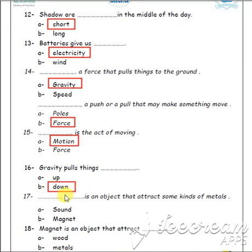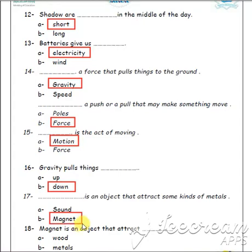Good job! Number 16: gravity pulls things up or down? Down — for sure! Number 17: what is an object that attracts some kinds of metals — sound or magnet? Magnet. Number 18: a magnet is an object that attracts what? Metals. Excellent!